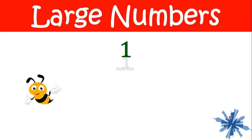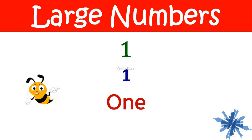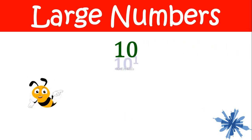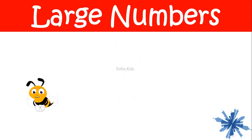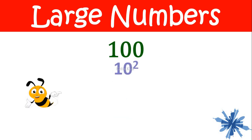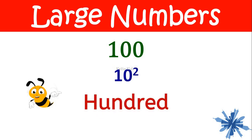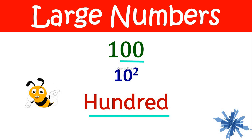So let's start with one. This is one. Next, let me add one zero here — it becomes ten, that is one followed by one zero. Let me add one more zero — this becomes hundred, that is one followed by two zeros.